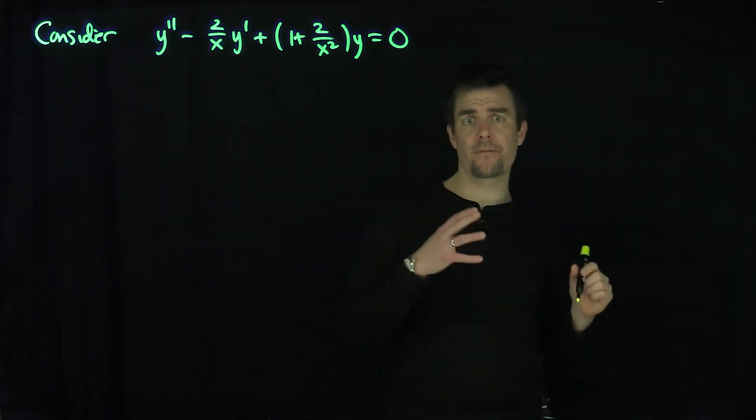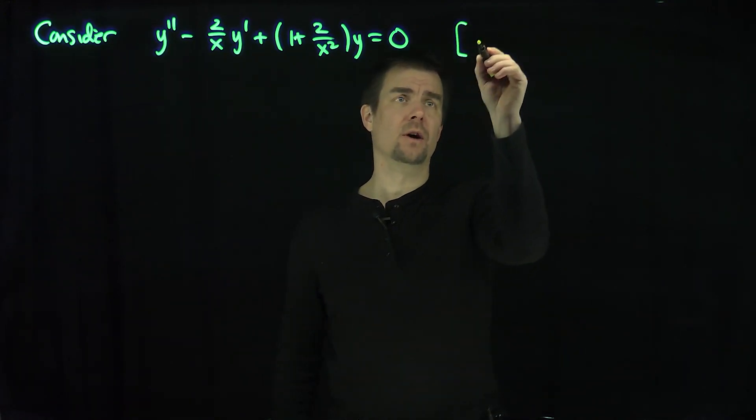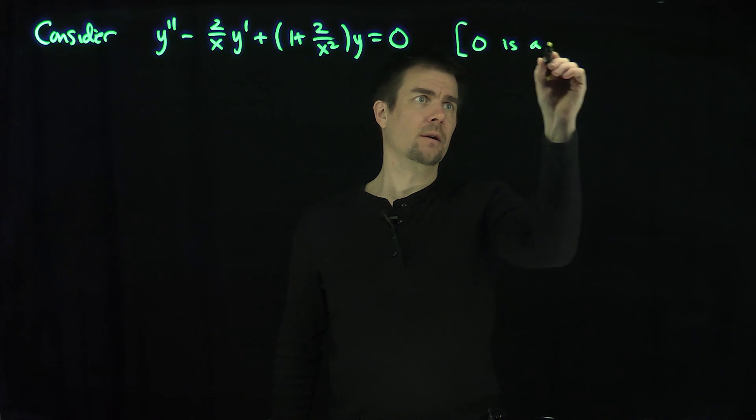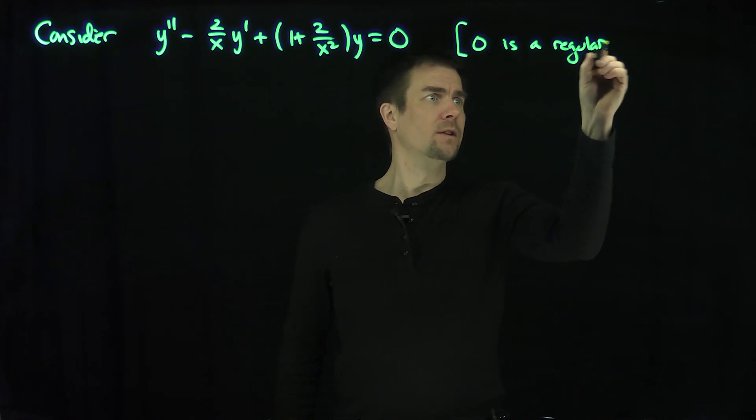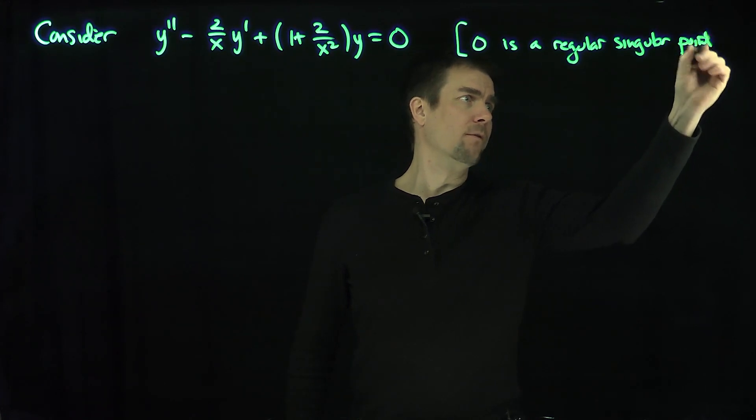This is exactly in the form where 0 is a regular singular point for this ODE. Note that 0 is a regular singular point when we use the method of Frobenius.